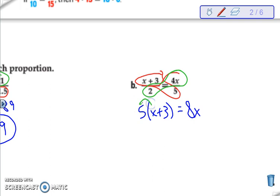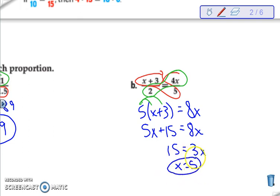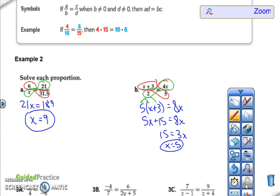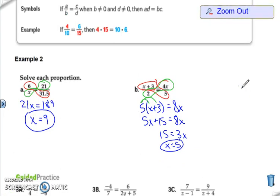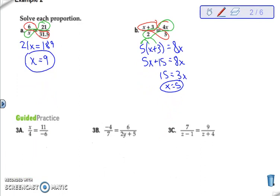Remember when we have a number in front of the parentheses, that is telling us to distribute the 5, or multiply it to all the numbers inside the parentheses. And now we have our regular equation that we can solve. So we will subtract the 5 on both sides and then divide everything by 3. So go ahead and knock out the guided practice. Again, remember to cross multiply and then solve your equation.